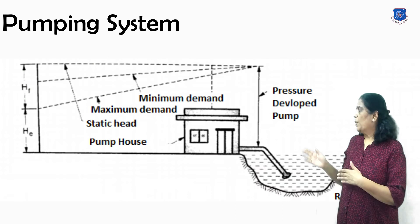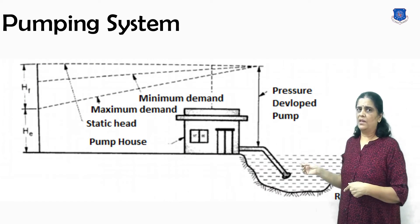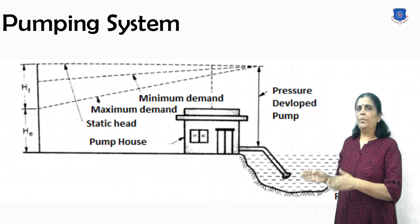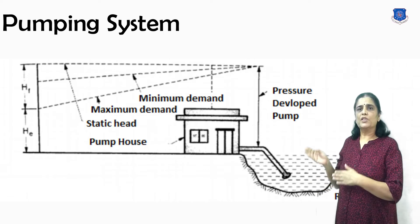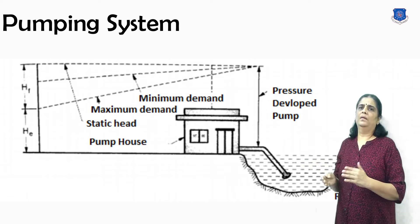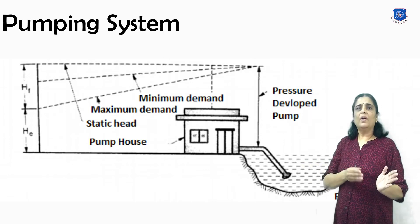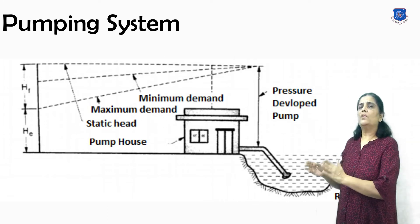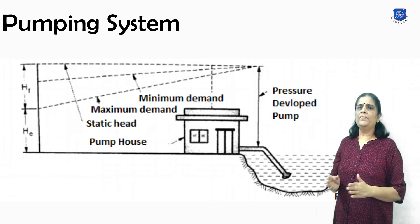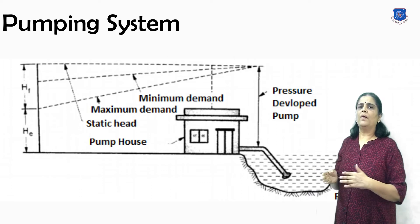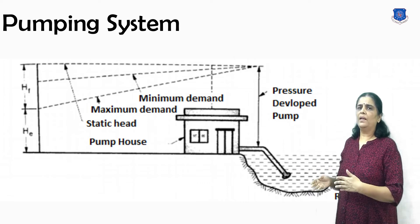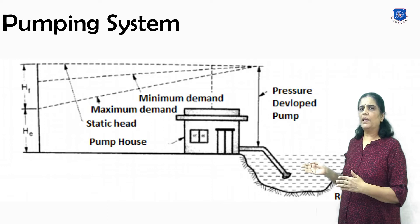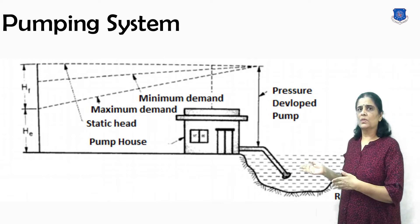In the pumping system, as you can see in the figure, treated water is directly pumped into the distribution system. This system is made without any storage facility, and is also called a pumping-without-storage system. High-lift pumps are required with a continuous power supply. This method is not generally used.